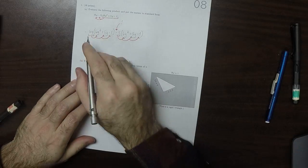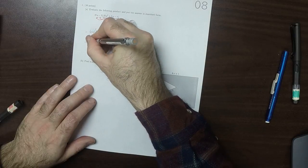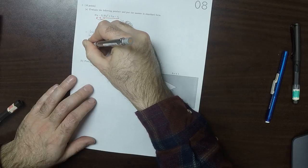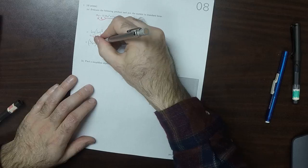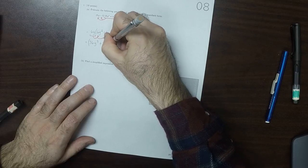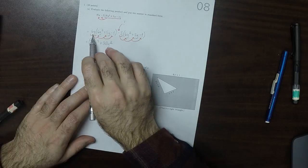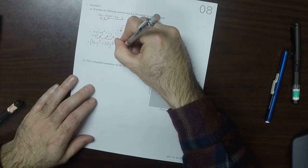Okay, so 6y times 6y squared, that would be 36y cubed. And then 6y times 5y, that's plus 30y squared. And then 6y times negative 1, that's minus 6y.